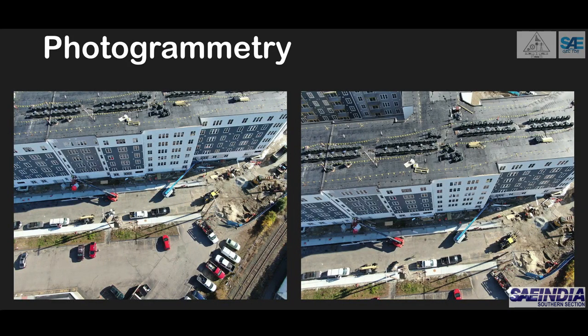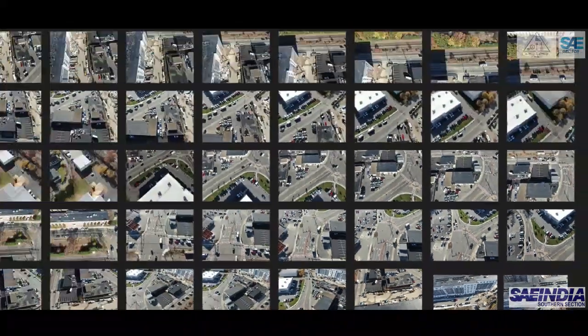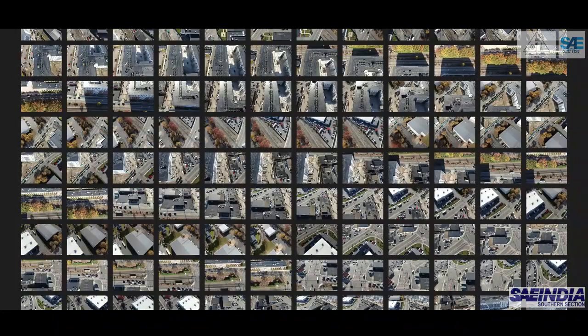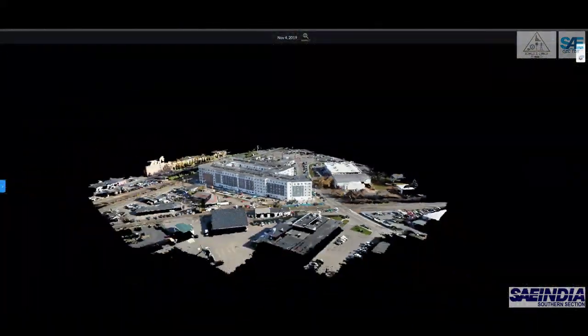This is how Photogrammetry works. It looks at photos of a subject taken from two or more locations. It uses the different perspectives of the images to check for similar pixels, and then finds the location of points on the subject. The more photos you have of the subject taken from different locations, the more accurate the end result will be.